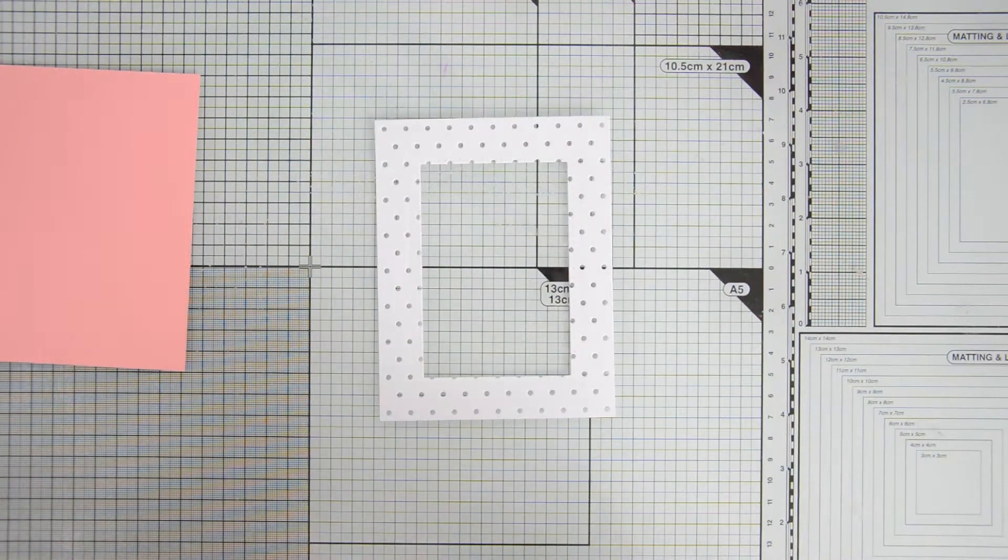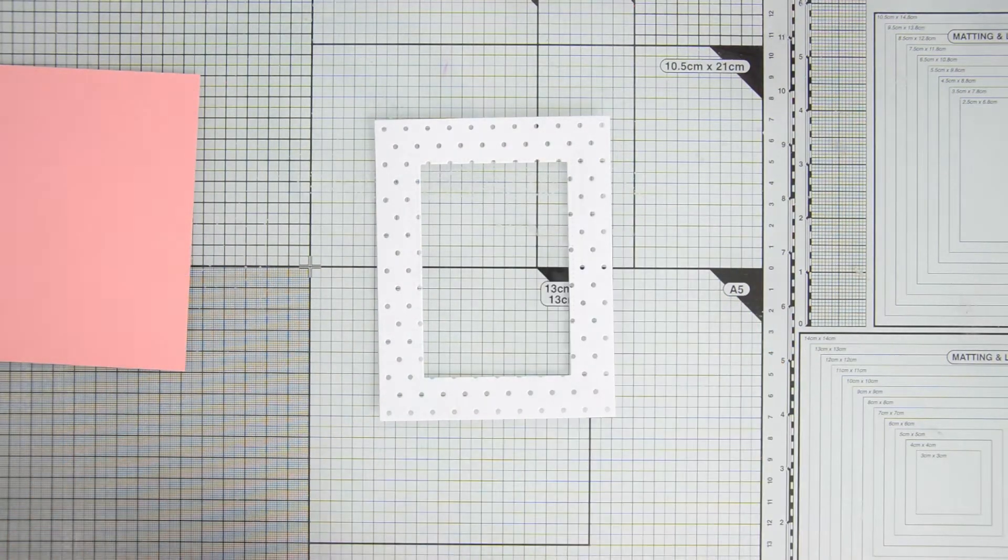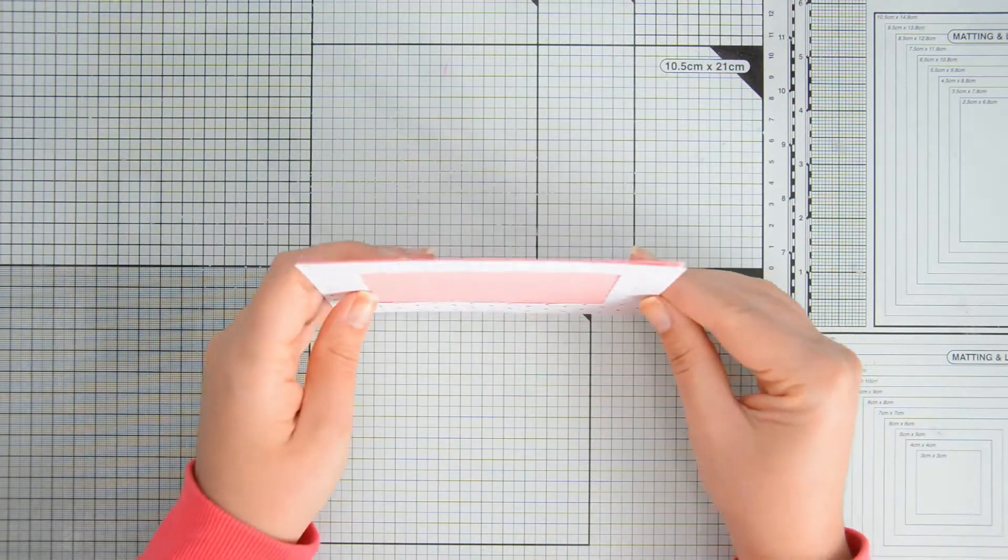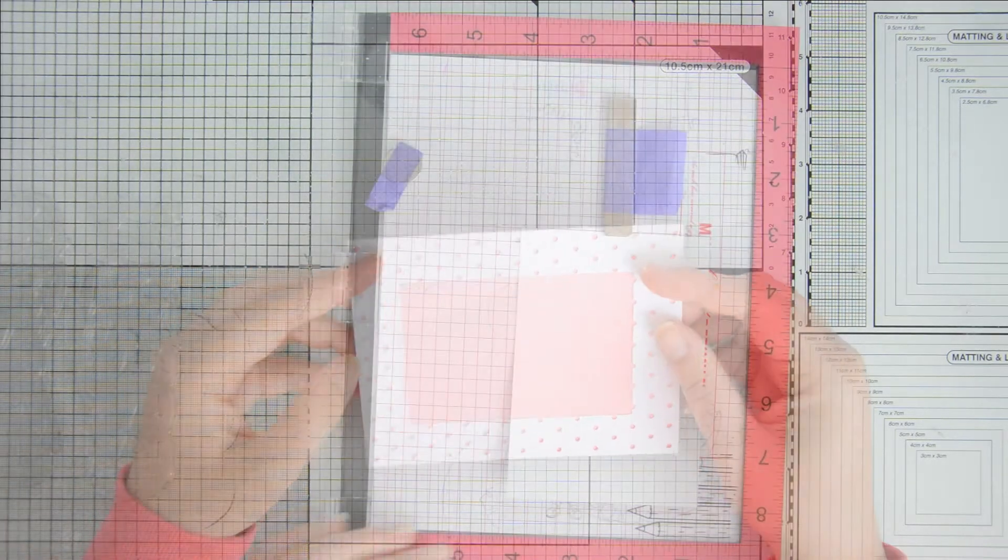I secured the die with some purple tape and then I ran everything through my die cutting machine. I'm left with a rectangle and a thin frame that I can use on a separate project, and this is how the two panels look once they are layered together.